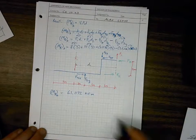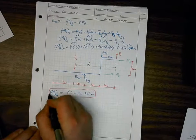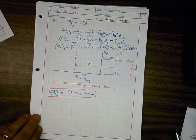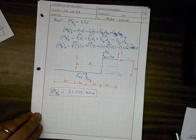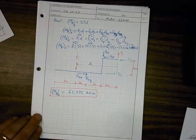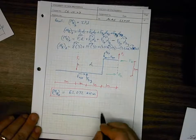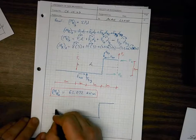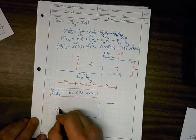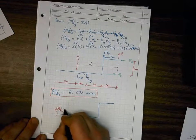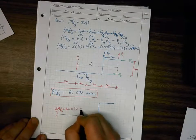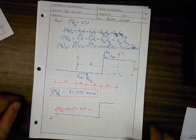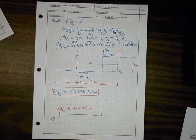That's a positive value, meaning the resultant moment at A due to all those moment couples is +61.072 kN·m, counterclockwise. The question also asked us to determine the force resultants at A, so let's do that.